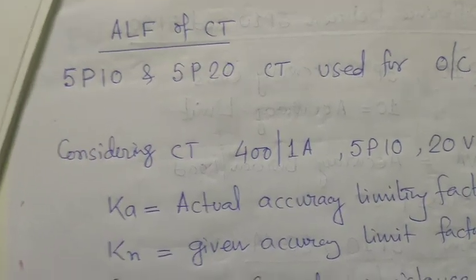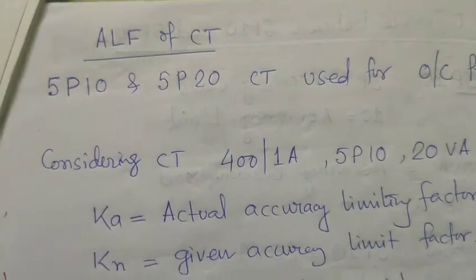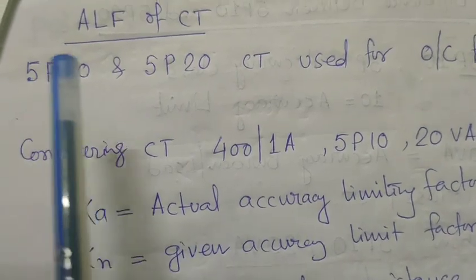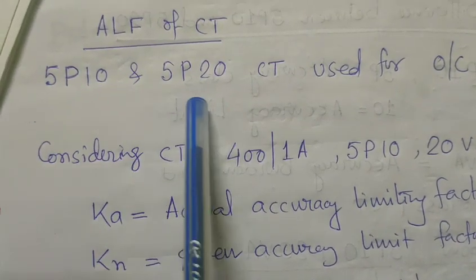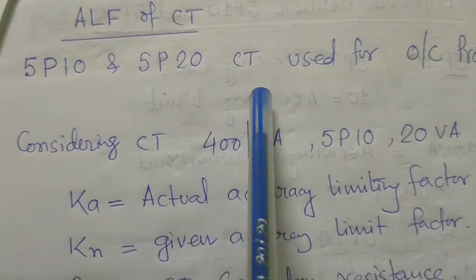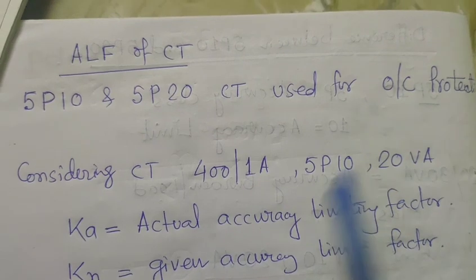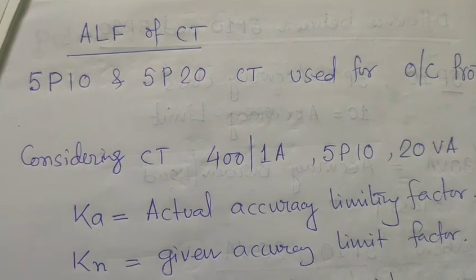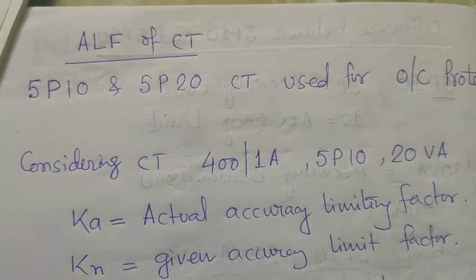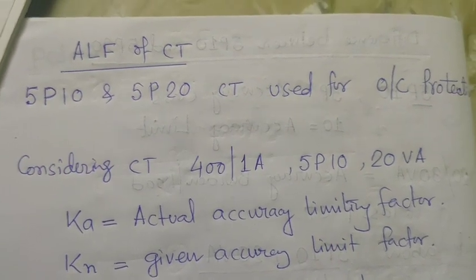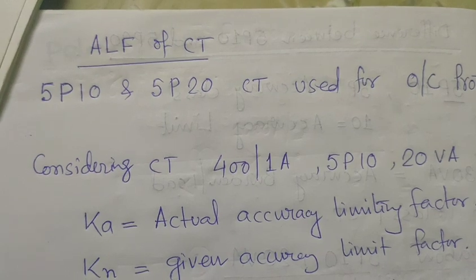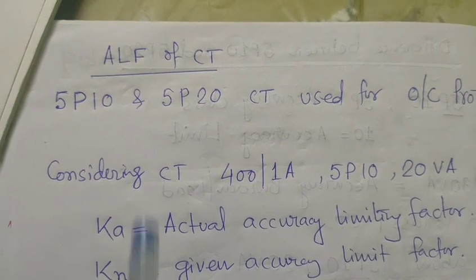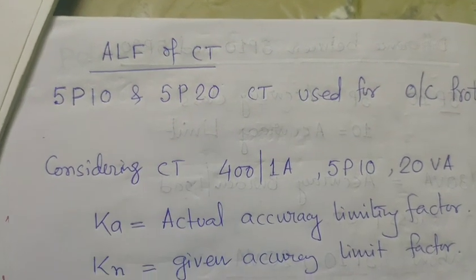ALF — Accuracy Limiting Factor — of the CT. 5P10 and 5P20 CTs are used for overcurrent protection, differential protection, and different types of protections where we use ALF-type CTs.